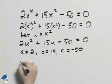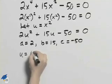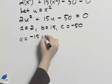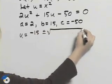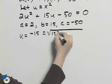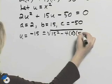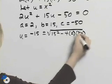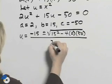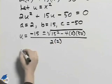Solving for u, we'll have u is equal to minus b plus or minus the square root of 15 squared minus 4 times a times c all over 2 times a.